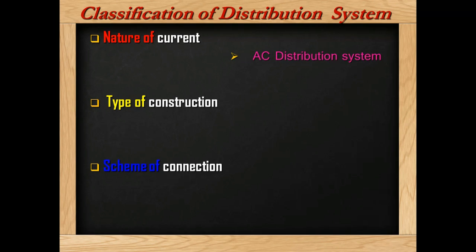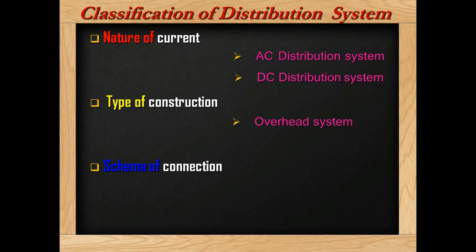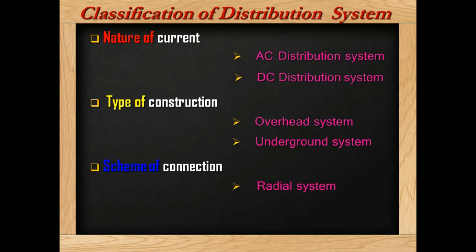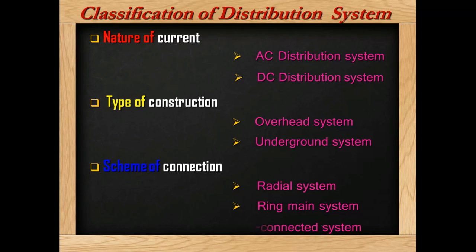Under nature of current, there are AC distribution system and DC distribution system. Coming to type of construction, there are overhead system and underground system. And for scheme of connection, there are three types: radial system, ring main system, and interconnected systems.